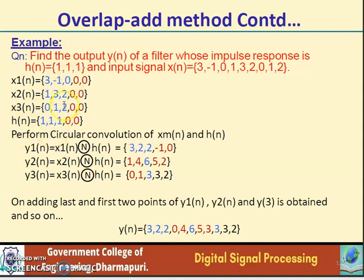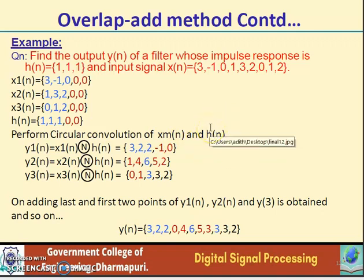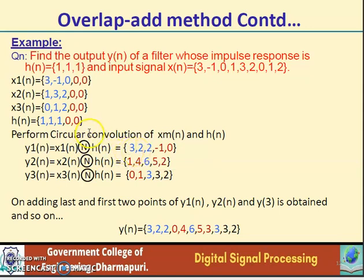After these steps, we perform the circular convolution of each block xm(n) with h(n). The circular convolution method was already explained in earlier videos, so here the results are shown directly. The first block output y1(n) equals x1(n) N-point circular convolution with h(n), giving {3, 2, 2, -1, 0}.